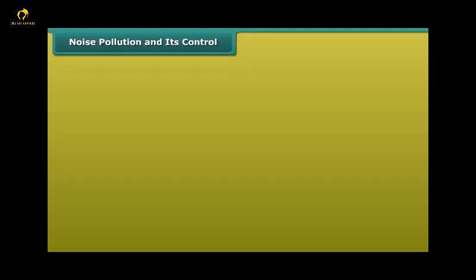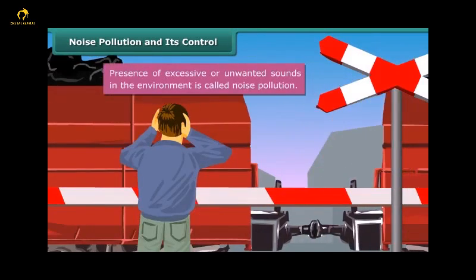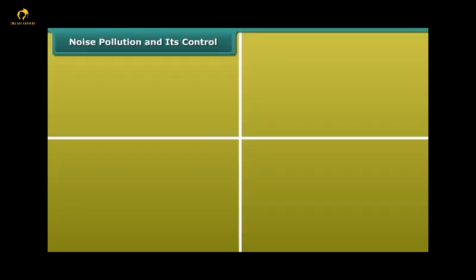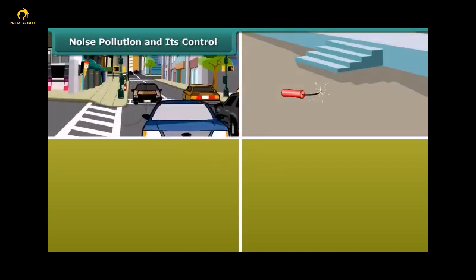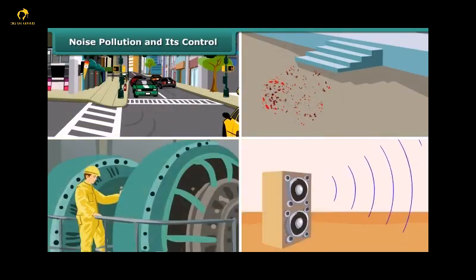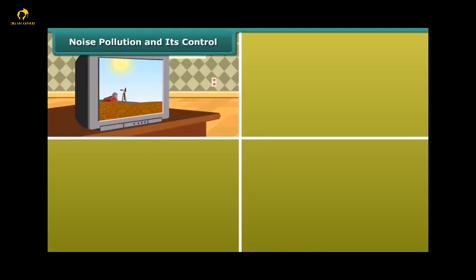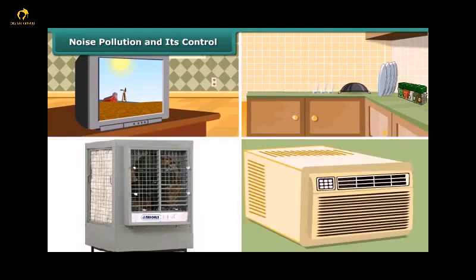Noise pollution and its control. Presence of excessive or unwanted sounds in the environment is called noise pollution. The major cause for noise pollution is sounds of vehicles, explosions including bursting of crackers, machines, loudspeakers, etc. Television and transistor radio at high volumes, some kitchen appliances, desert coolers, air conditioners all contribute to noise pollution.